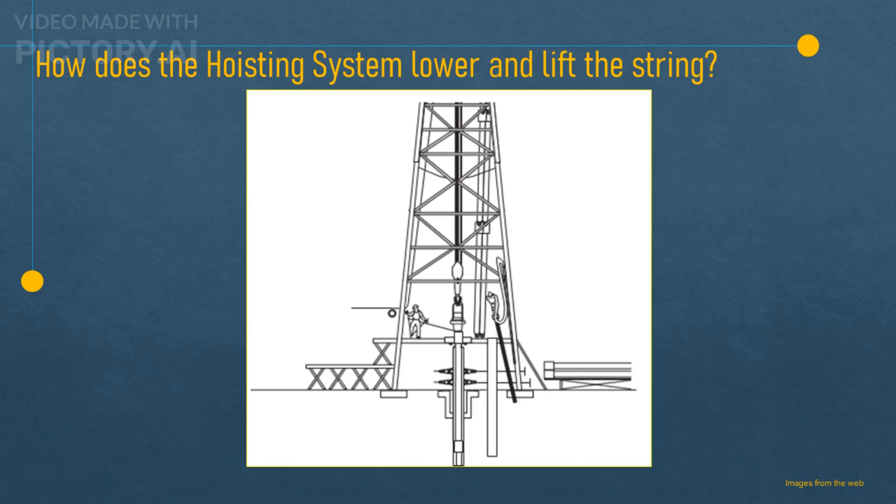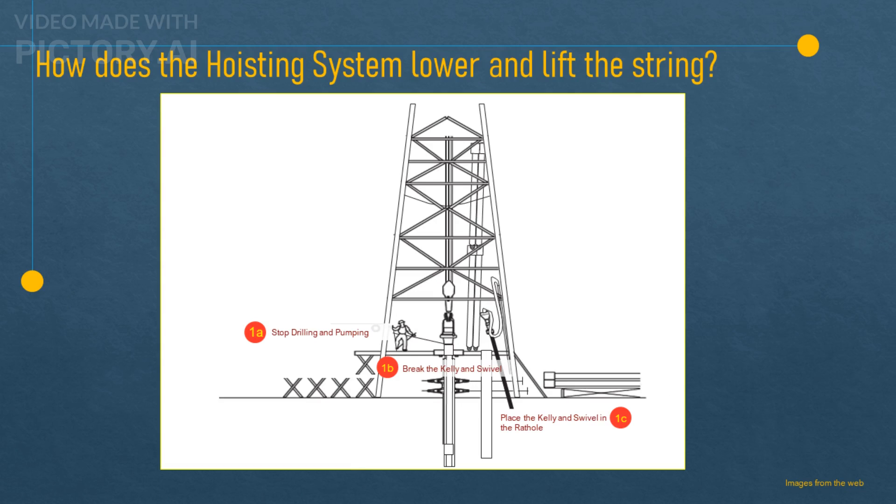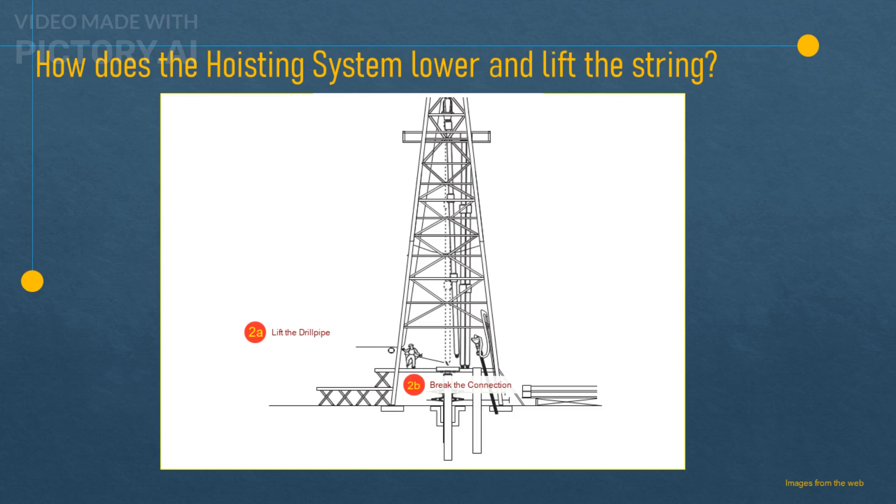To raise some drill pipe out of the well, you would do the opposite. Step 1. You stop the rotary and pumping, lift the kelly until the bottom connection is above the rotary table, set the slips, break out the kelly and swivel, and set them back in the rat hole. Step 2. You lift the drill pipe until a stand is exposed above the rotary table, and break the connection at the rotary table. Step 3. You move the stand of drill pipe away from the rotary table and arrange it in an orderly fashion in the pipe setback area.